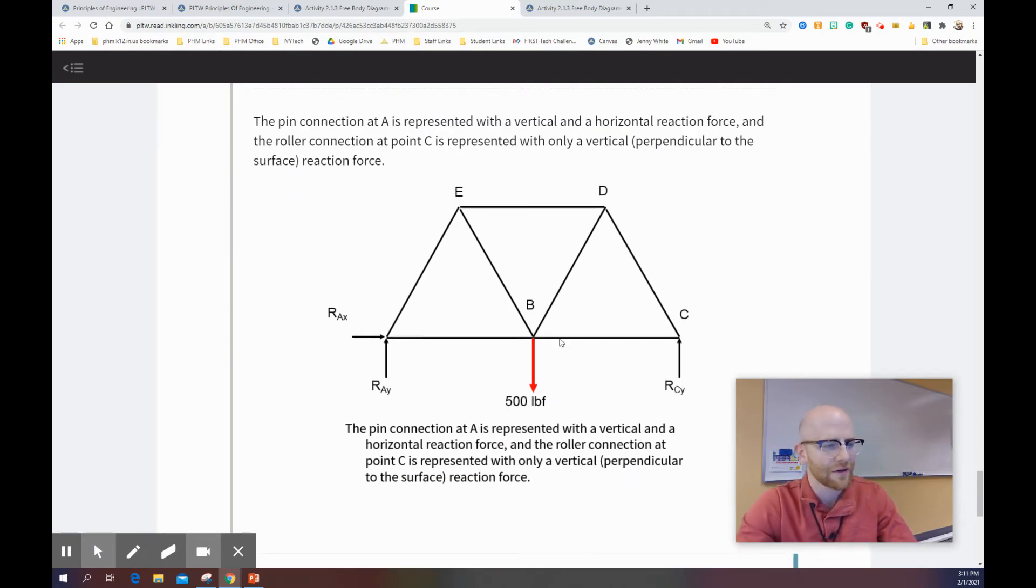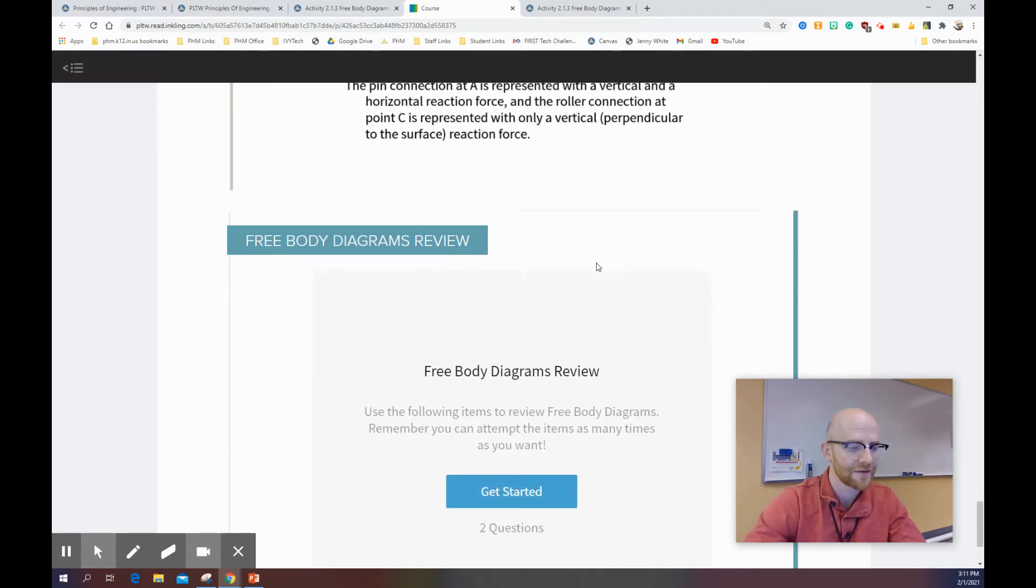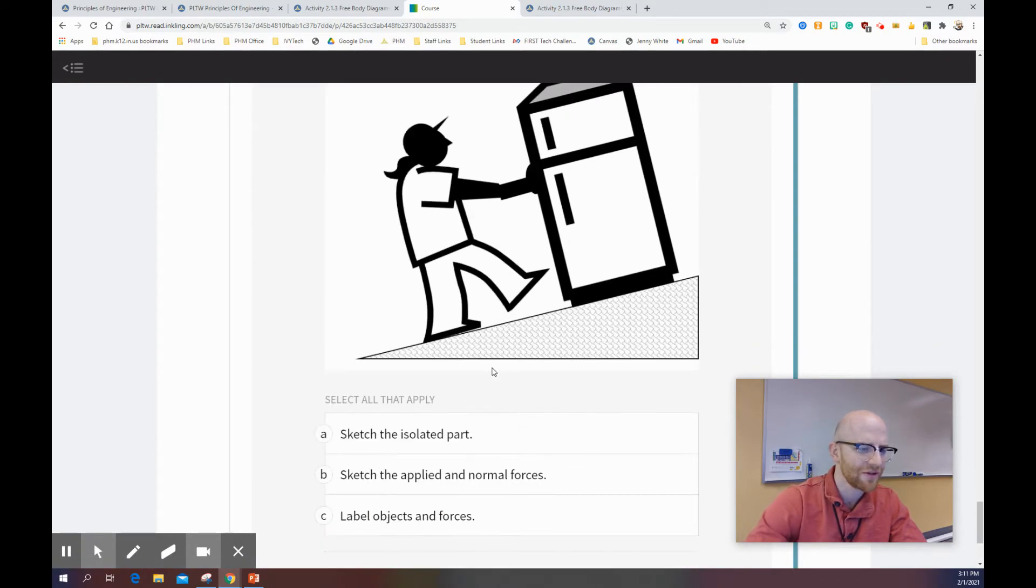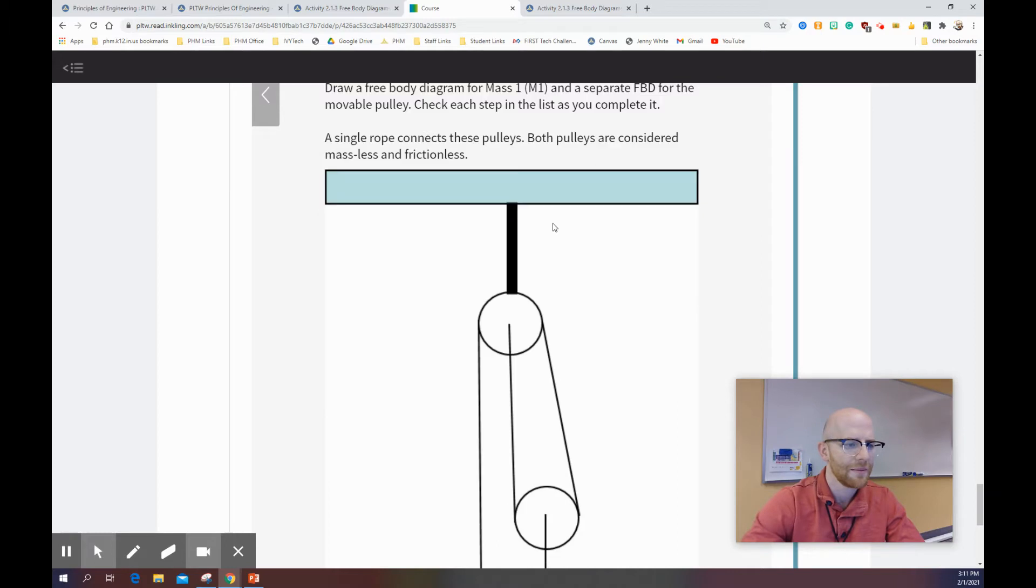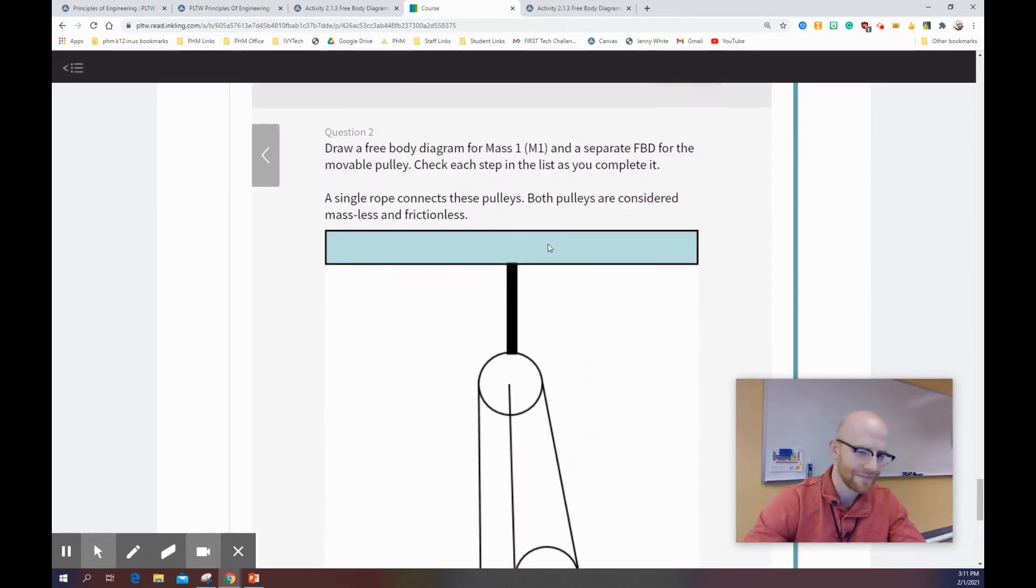This would be the free body diagram for the above image right here. Nothing crazy. Just you're showing that this 500 pound load is met with reactionary forces at A and C. Now, you can see that those were the only things opposing the force. If this didn't have the roller or the pin, it would be impossible to tell where the actual reactionary force is. But these little images represent that those are the attachment points for this stuff. And then it clicks.